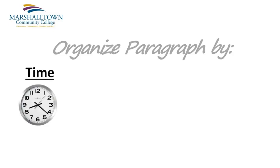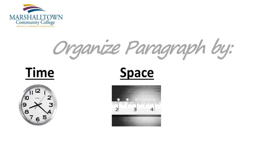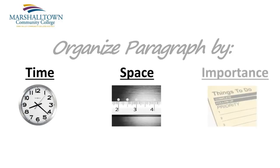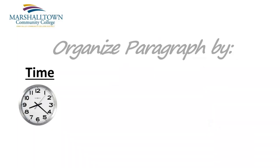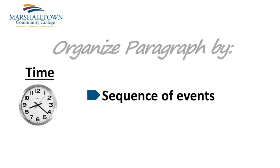Now keep in mind that a paragraph can be organized in three different ways. You can organize a paragraph by time, by space, or by importance. Let's take a closer look at each of these. When we organize by time, we're talking about a paragraph that explains a sequence of events, or in other words, a paragraph that tells a story.